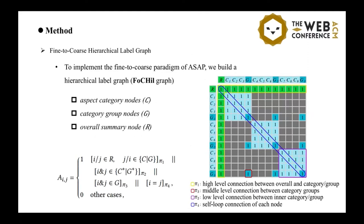Then, let's check the fine-to-coarse hierarchical label graph, which we built for implementing the fine-to-coarse paradigm of ASAP. So, there are three types of nodes: the aspect category, the category group, and the overall summary nodes. And based on which we construct the node linking matrix as shown here, the red figure.